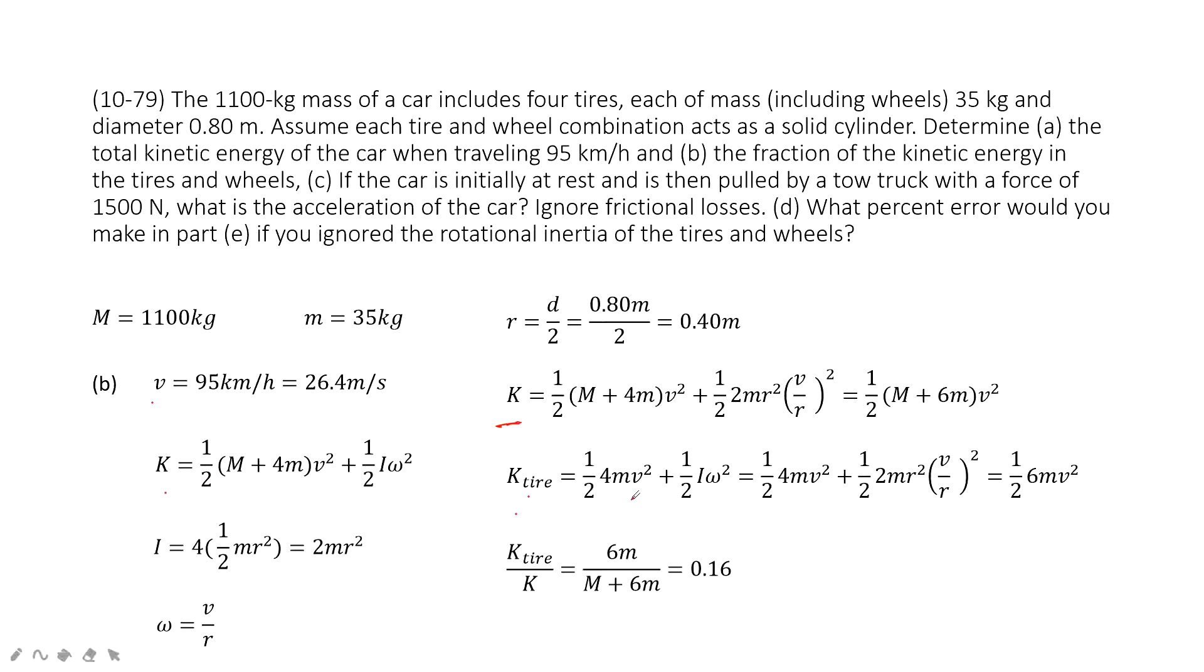For problem B, we need to find kinetic energy for the tire. The linear kinetic energy for tire is one half four m v squared plus the rotational motion. Then you input this quantity inside and use this one divided by the total, we get the ratio. Kinetic energy tire to the total kinetic energy, and you are done.